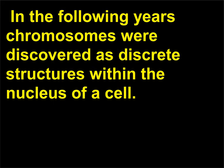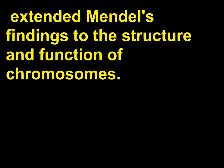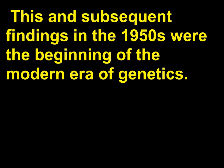In the following years, chromosomes were discovered as discrete structures within the nucleus of a cell. In 1917, Thomas Hunt Morgan (1866–1945), a fruit fly geneticist at Columbia University, extended Mendel's findings to the structure and function of chromosomes. This and subsequent findings in the 1950s were the beginning of the modern era of genetics.